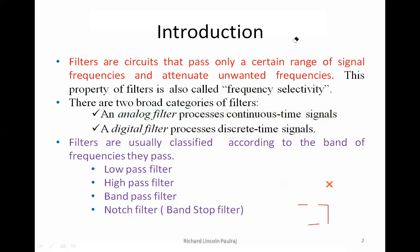Digital filters use discrete signals, meaning they are not continuous like analog signals. Filters are classified based on the band of frequencies they pass, and there are four major categories: low pass, high pass, band pass, and notch — also called band stop filter. All these terms refer to specific filter types, so keep that in mind.